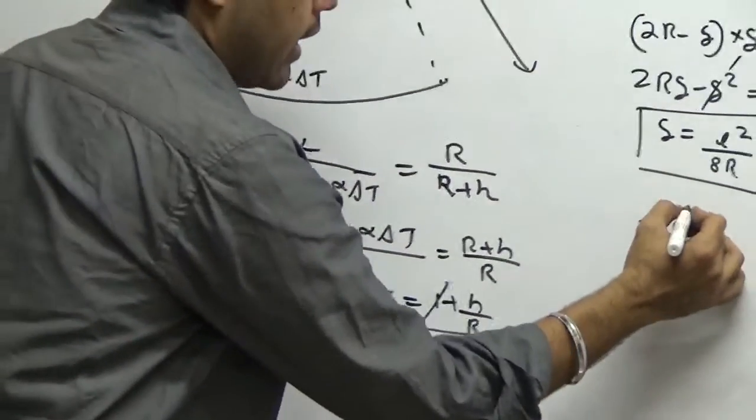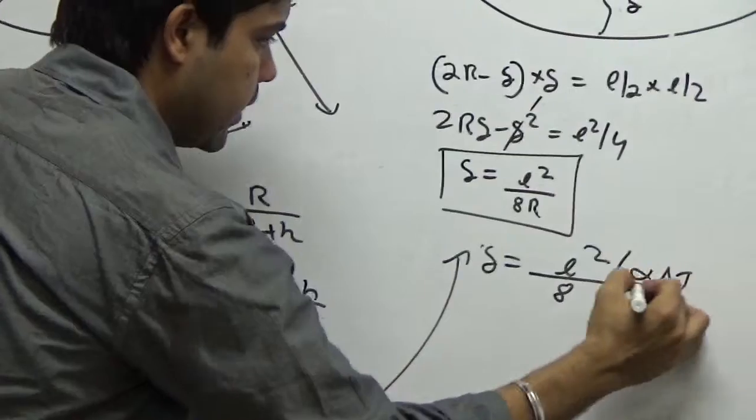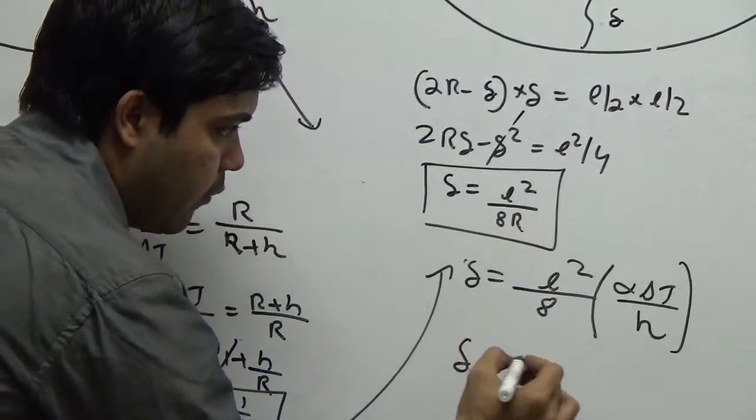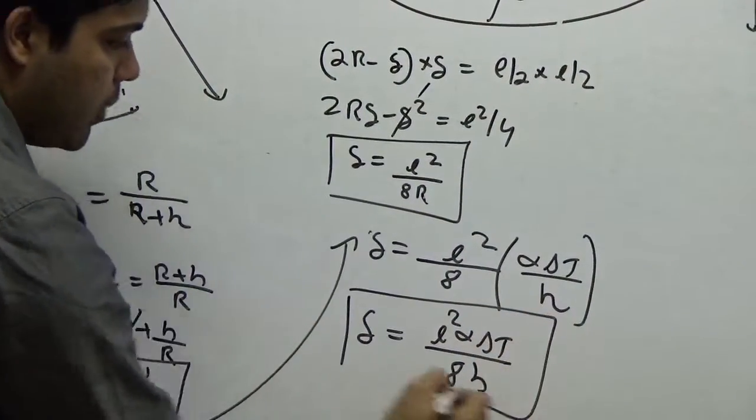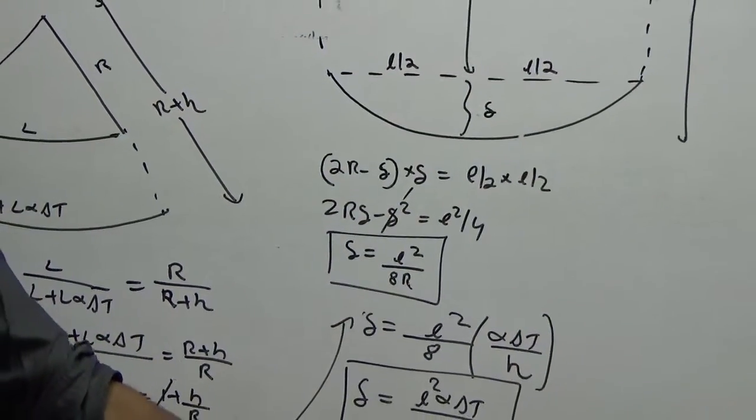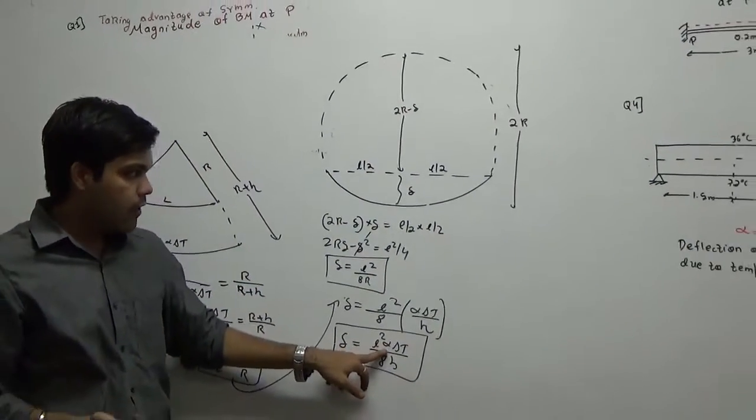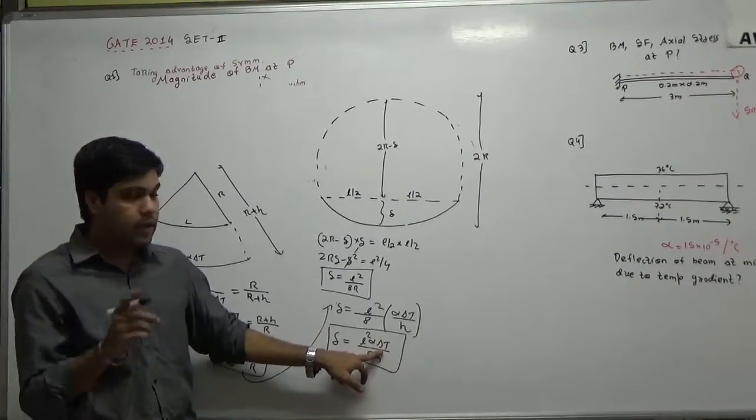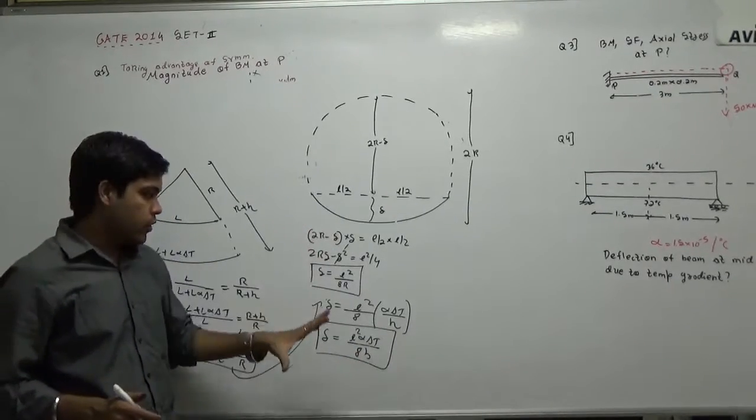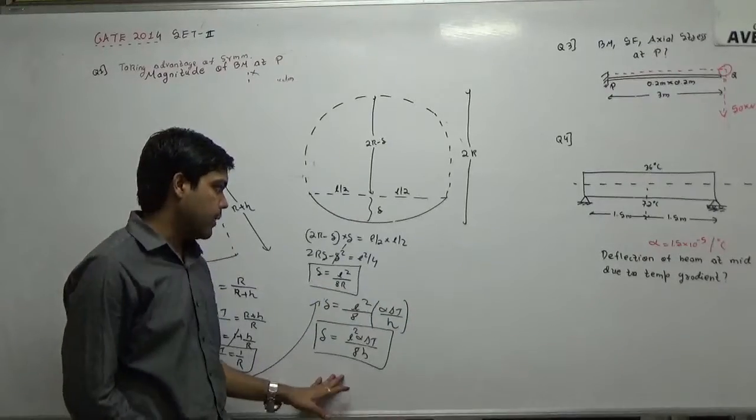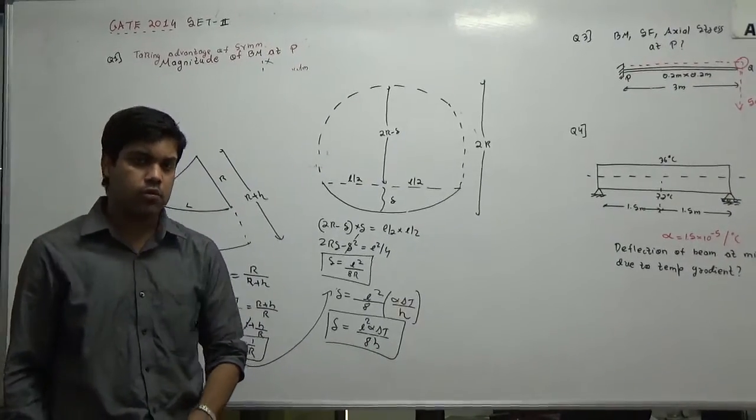Now if I substitute this 1 by R back here, I get delta is equal to L square upon 8 into alpha delta T upon H. Finally my deflection formula is L square alpha delta T upon 8H. There is also an IES problem asked for just the formula, but in this GATE problem they are asking you the value. So for that you know L. Your L is 3 meters. Your alpha value is 1.5 into 10 power minus 5. Delta T will be the difference in temperature. So you have to subtract 72 and 36. 8 you know and H is the depth of the beam. So this way you can substitute the values and find the answer. And this completes the problems on 2014 set 2. The next video will be on GATE 2013 questions on structures.